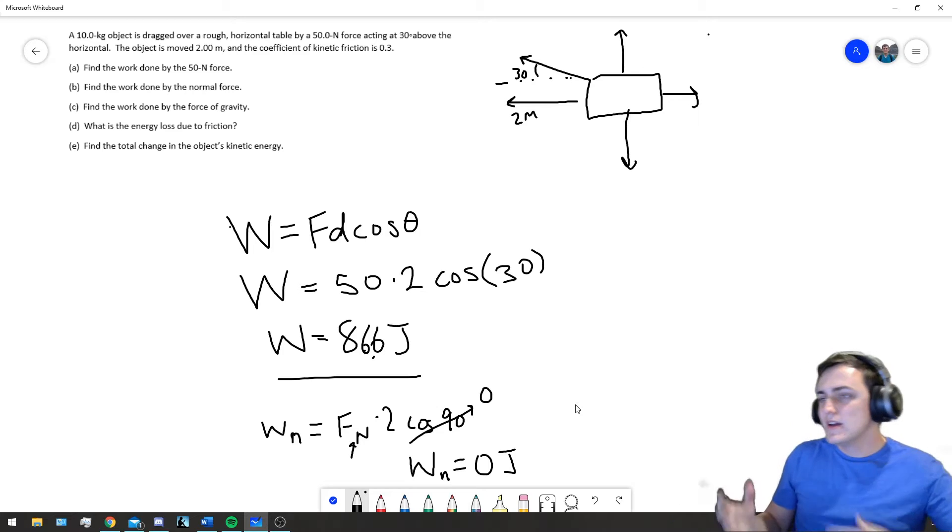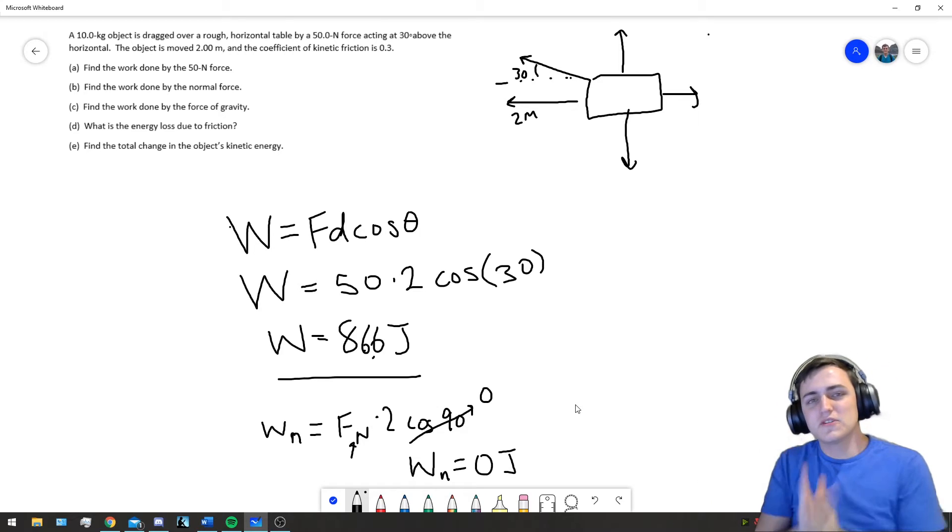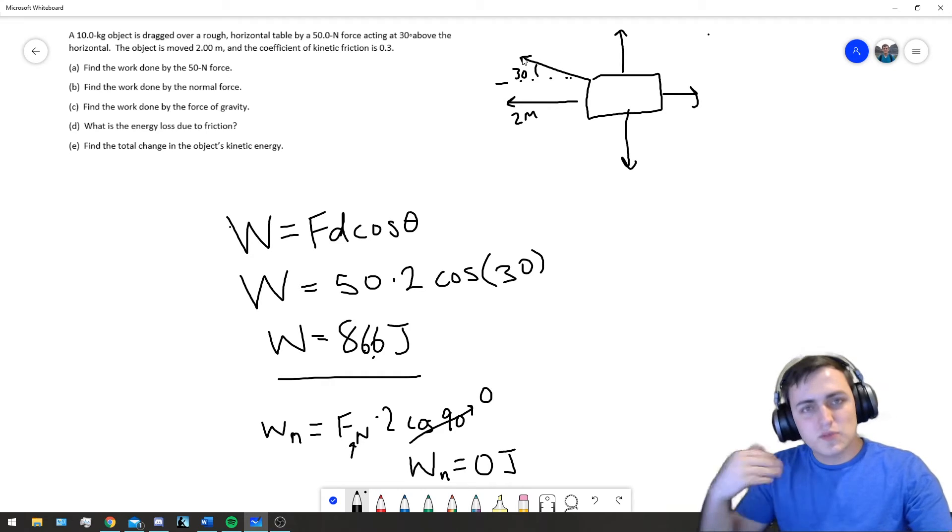The normal force, since it points perpendicular to that displacement, it's perpendicular. It, cosine 90, goes to 0. And, so, it does no work. In order for it to have done work, it needs to point in that same direction. And, so, part C follows that same kind of idea, where the force of gravity is perpendicular to it. It exerts no force.